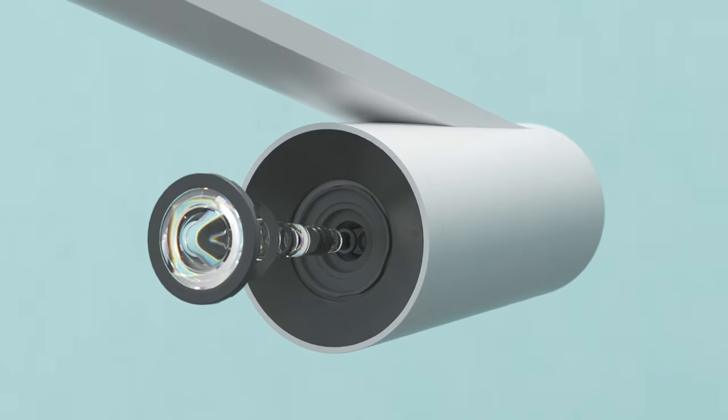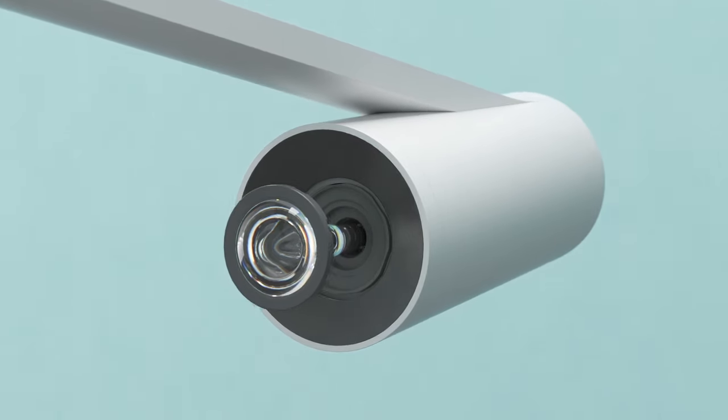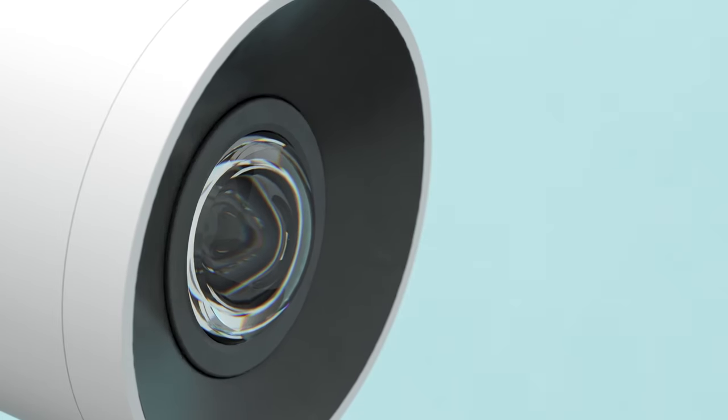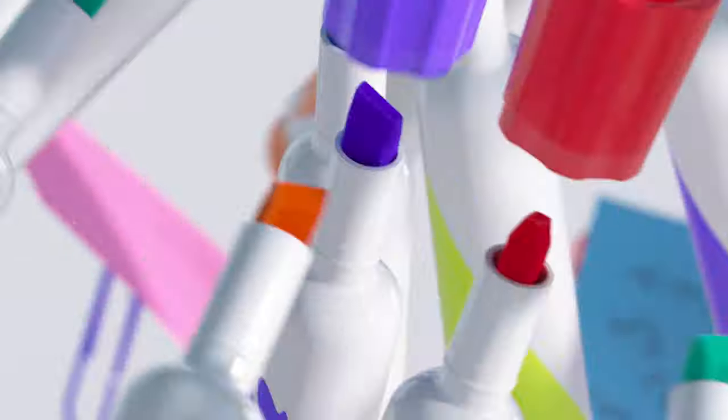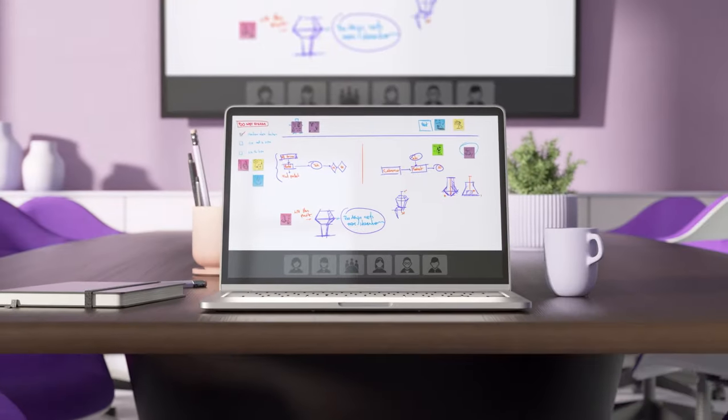Scribe's ultra wide angle lens captures whiteboards of up to 6 by 4 feet or 2 meter by 1.2 meters. It even enhances the color of markers so everything you draw and write appears bright and vivid.